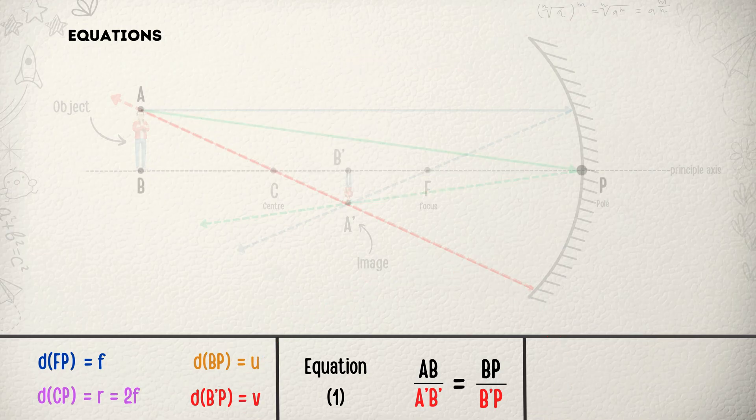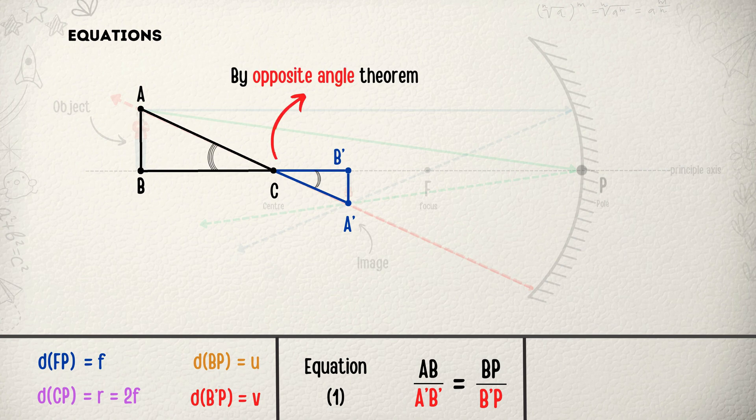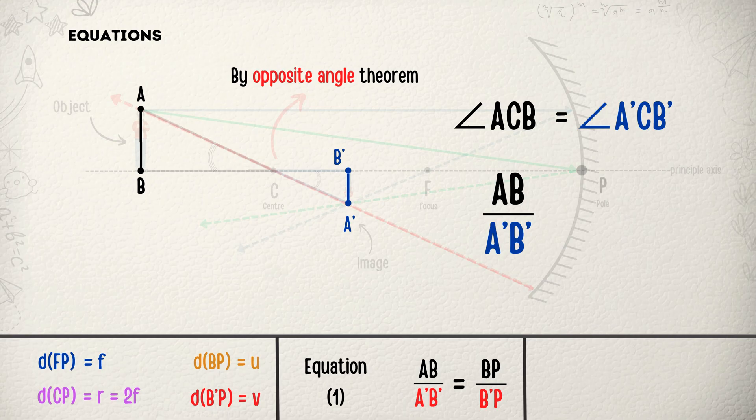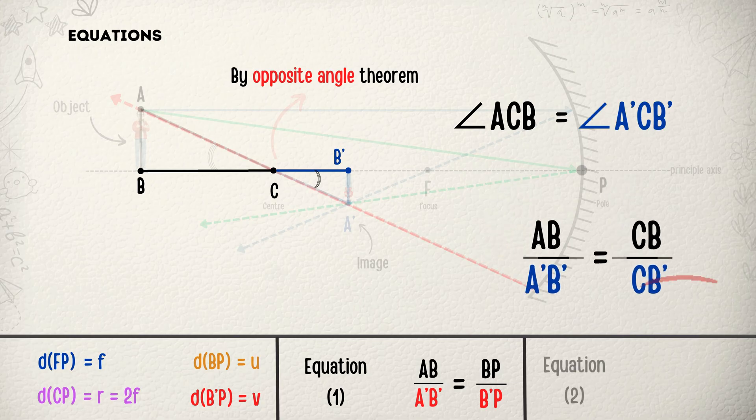Now for the second equation, we will focus on triangle ABC and triangle A'B'C. Here by opposite angle theorem, angle ACB will be equal to angle A'CB'. It means AB divided by A'B' will be equal to CB divided by CB', and we can call it equation number 2.